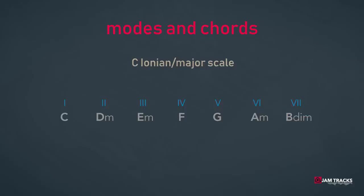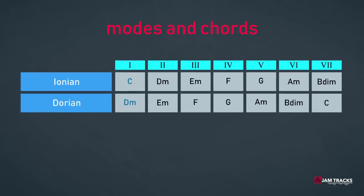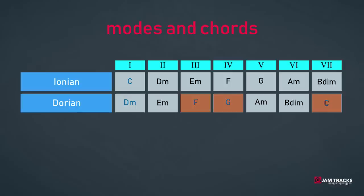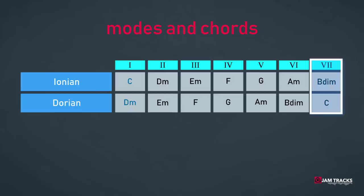To see the difference in chord configuration, let's do the same with the D Dorian mode, the second mode of the C major scale. We see a minor chord on the first, second, and fifth degree; a major chord on the third, fourth, and seventh degree; and a diminished chord on the sixth degree. There's quite a difference between the Dorian mode and the major scale: the tonic is a minor chord, the fifth degree — called the dominant in functional harmony — is a minor chord instead of major, and the seventh degree is a major chord instead of a diminished chord. Big difference.